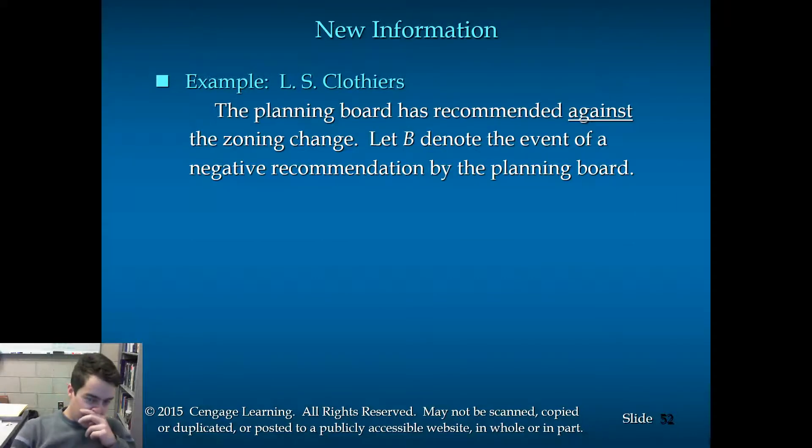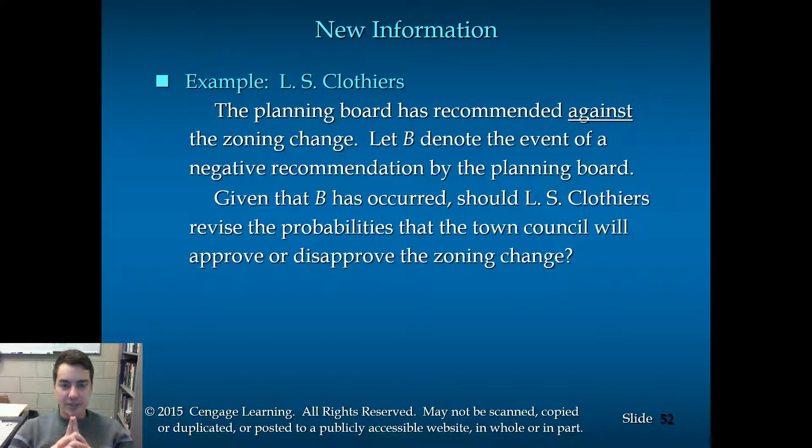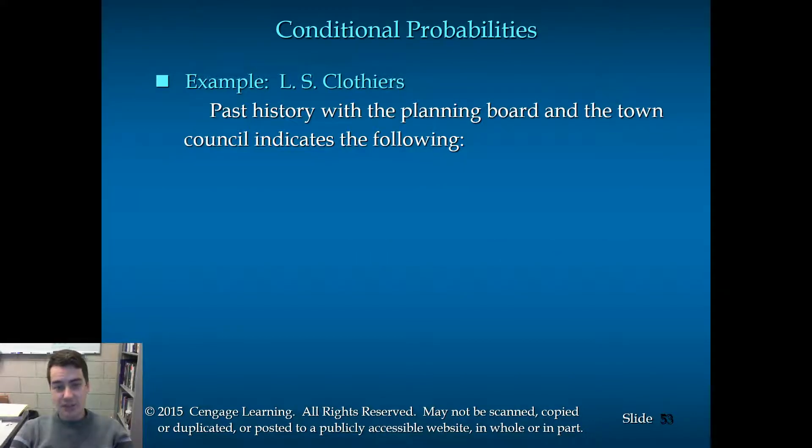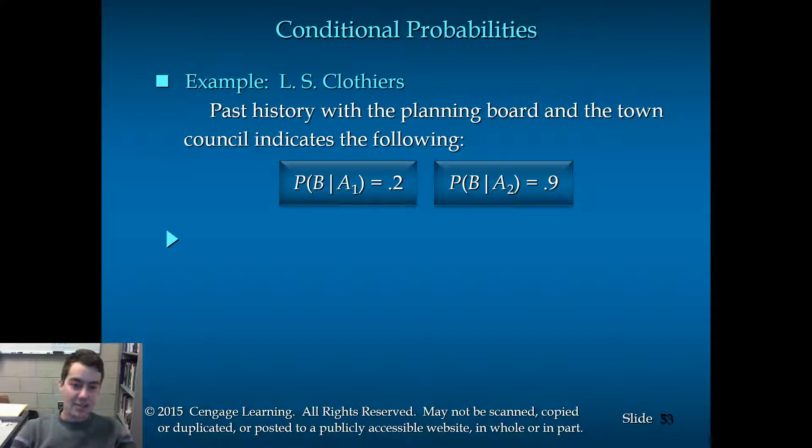Now, let's say that we find out that the planning board has recommended against the zoning change. Let's denote a new event B, which means that the planning board is given a negative recommendation. Given that a negative recommendation has been given, given that B has occurred, should LS Clothiers revise the probabilities that the town council will approve or disprove the zoning change? Well, the short answer is yes. Past history with the planning board and the town council indicates the following. If we look at the times in which the final decision by the council was approval, we see that there was a 20% chance that the initial recommendation was negative.